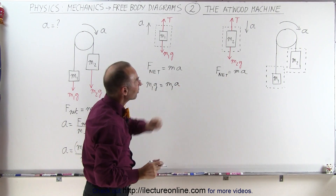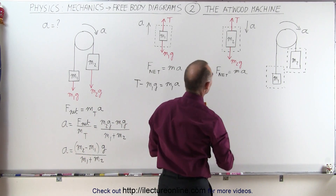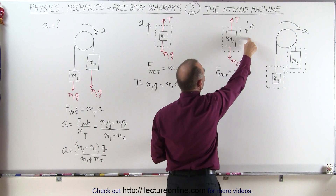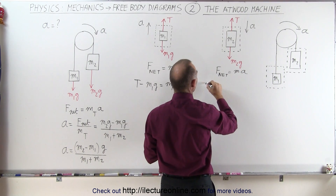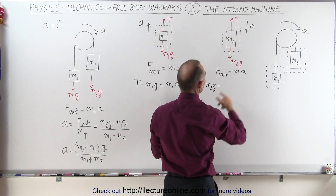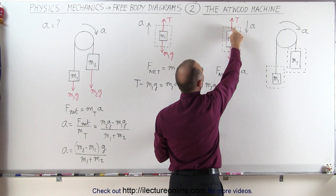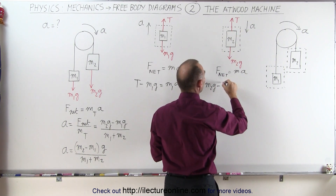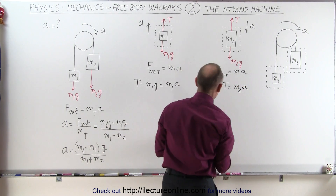On the right side, we do the same thing. The net force for M2 is determined by finding all the forces aiding the acceleration — which is M2g — minus all the forces opposing the acceleration, which is the tension T, since it acts opposite to the downward acceleration. That equals M2 times A.